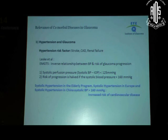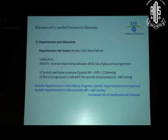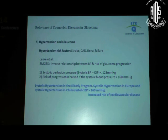The MCAT study actually showed that there was an inverse relationship between the height of blood pressure and the risk of glaucoma progression, implying that patients with higher blood pressures had a reduced likelihood of glaucoma progression. But that would not be a viable treatment option, because the systolic hypertension study in elderly patients from China and Europe showed that if the systolic blood pressure is 160 mmHg and above, there is a life-threatening risk because of end organ damage.